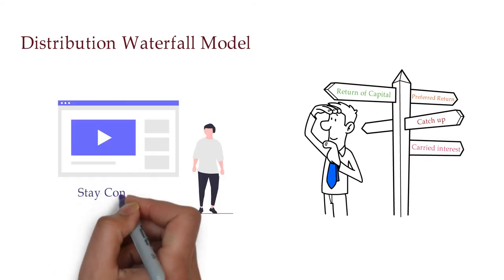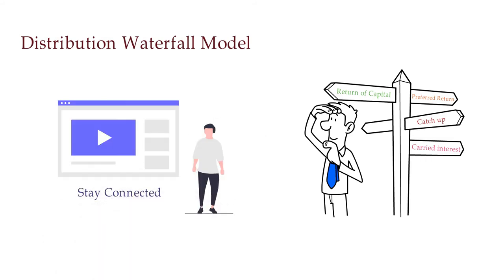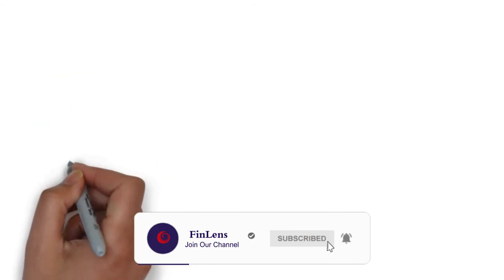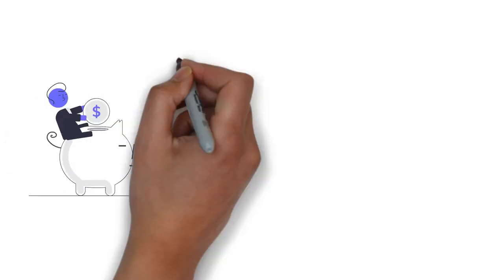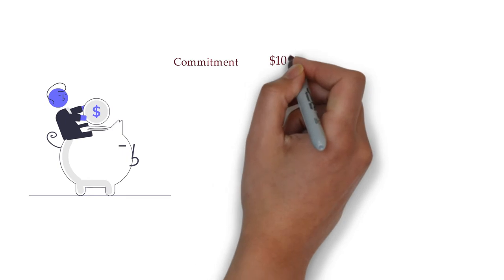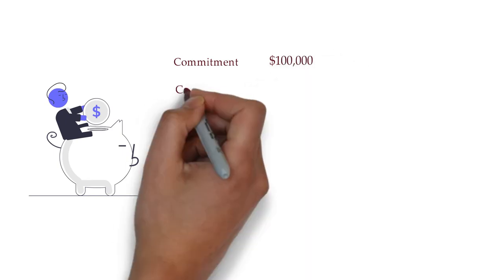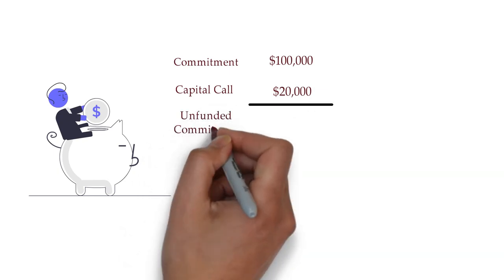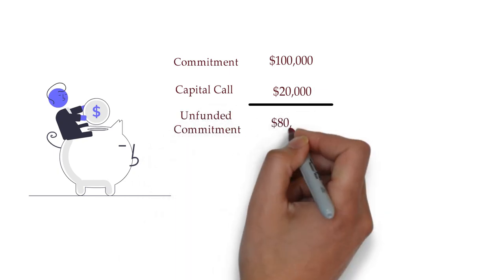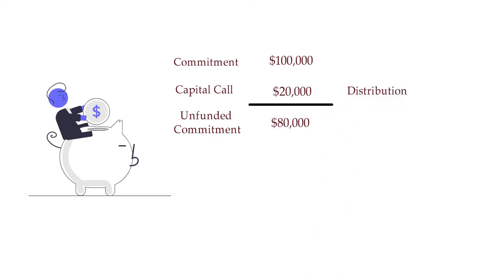Until then, stay connected and subscribe to our channel, FinLens. Now let's understand distribution with an example. An investor might commit $100,000 into a private equity fund and pay the first capital call of $20,000. Now suppose the fund receives a distribution from an underlying investment of $50,000.